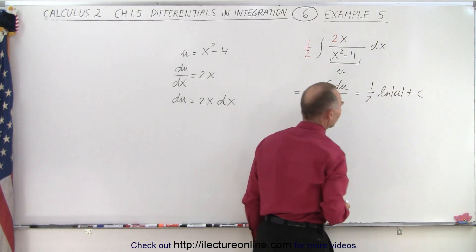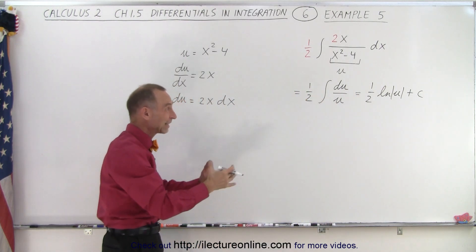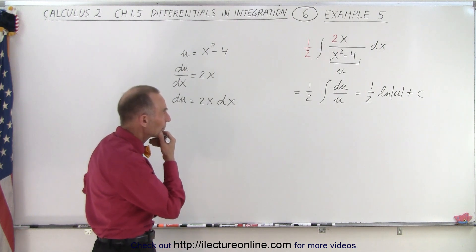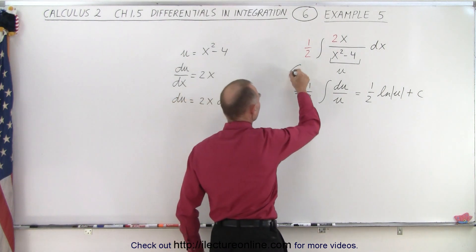Sometimes I put absolute value signs around it, realizing that you cannot have a negative number in there when you take the natural log. All right, so that means that we do the same thing over here.